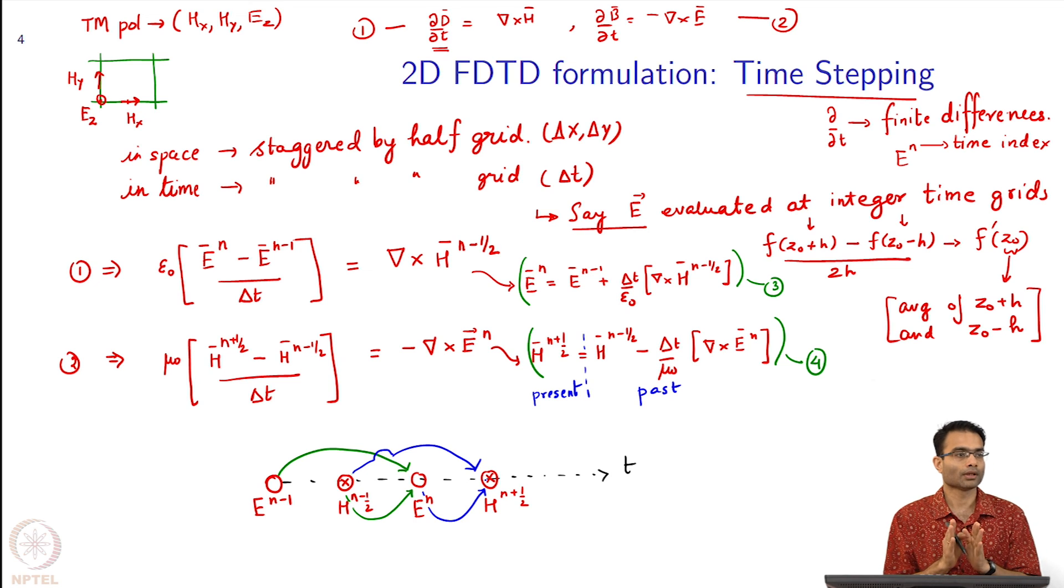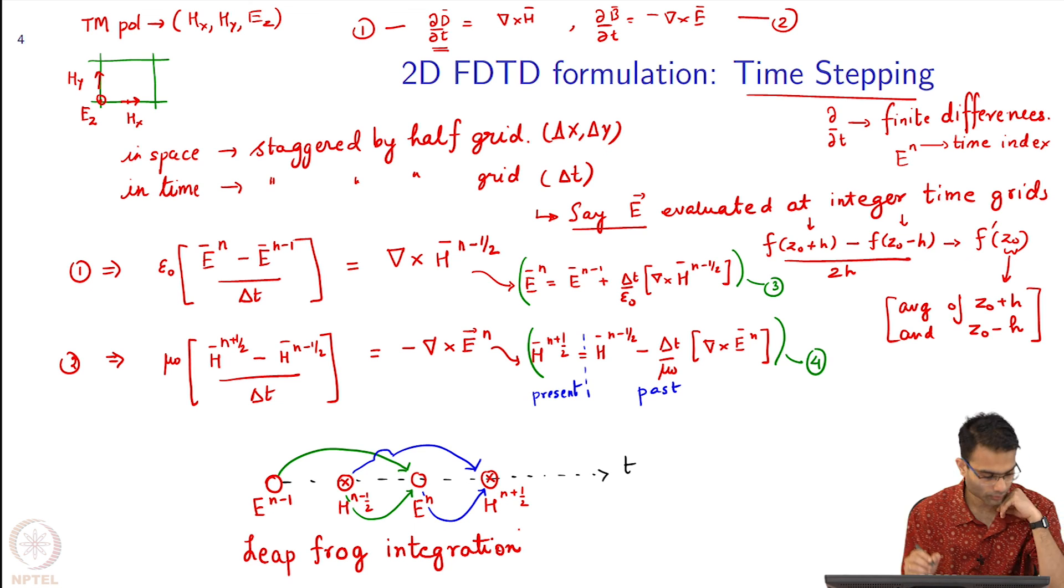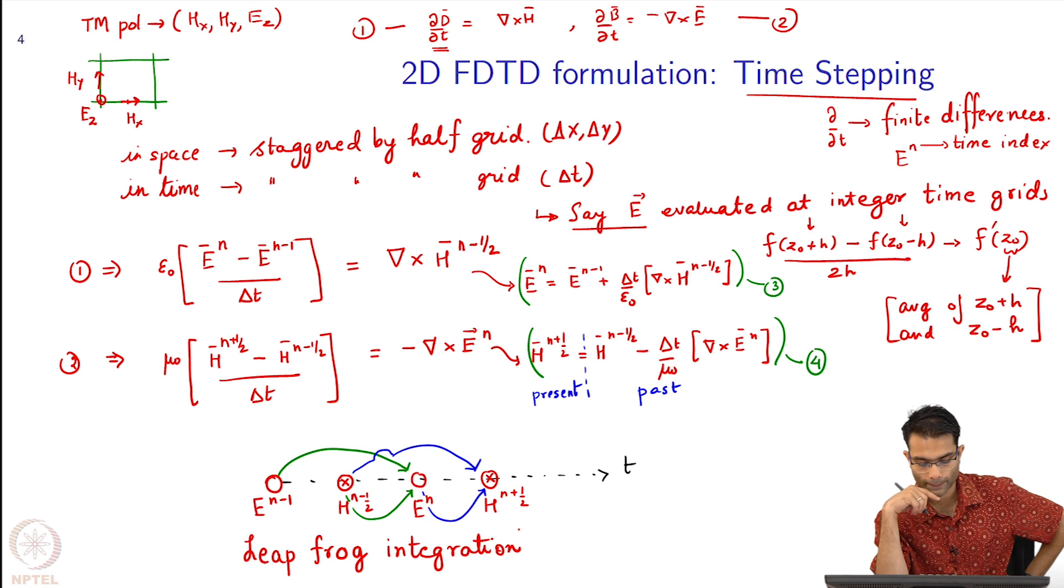The way this diagram has been drawn, it looks like a frog that is leaping in some sense. That is why this scheme is called a leapfrog integration scheme. This is a very characteristic thing of the finite difference time domain method, where this half a grid is really what is bringing everything out.